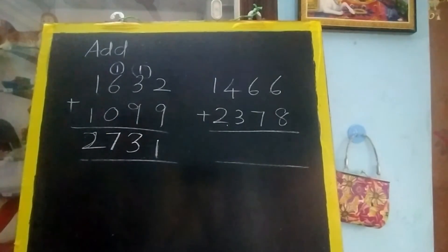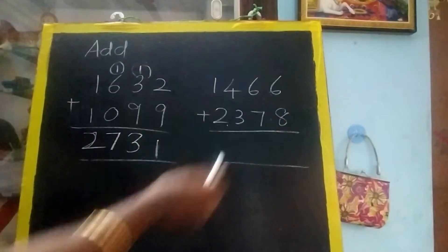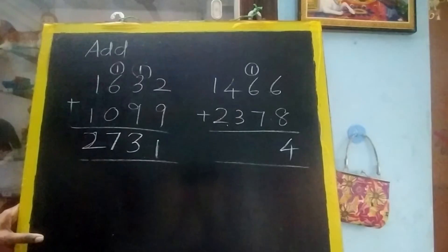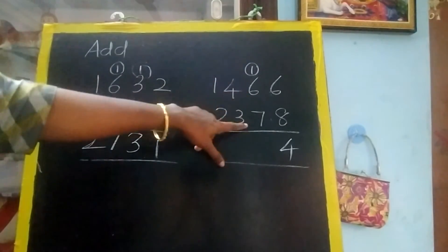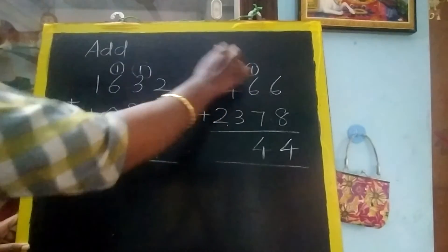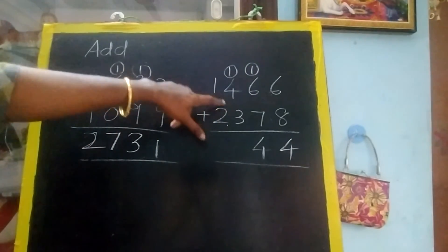The same: eight plus six equals fourteen, so four here, one carry. One plus six equals seven, seven plus seven equals fourteen. Again four. Always the last number will be down. One plus four equals five, five plus three equals eight.